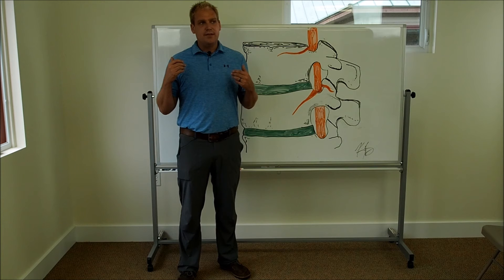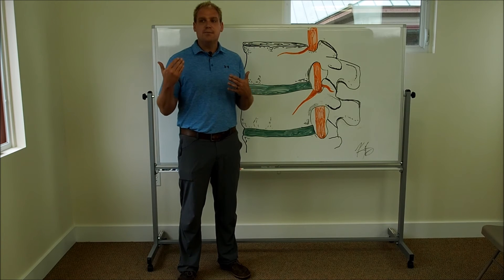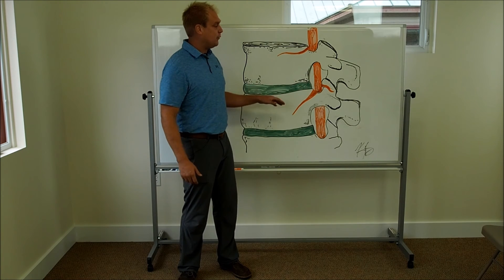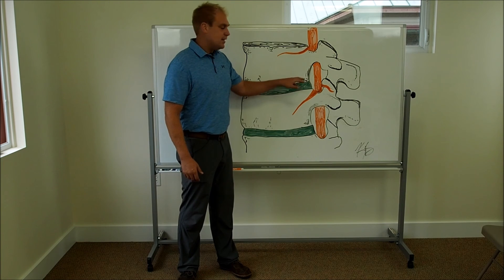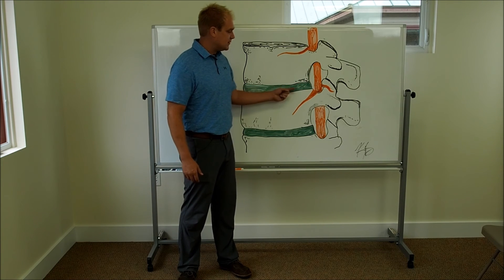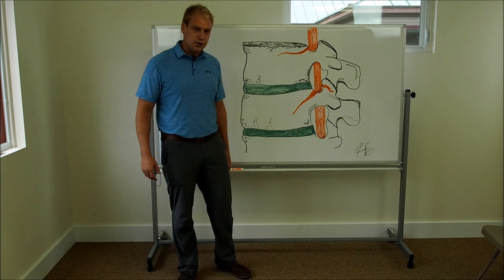So when that nerve is compressed anywhere along its pathway, it can be compressed where it comes out of the spine. It can be compressed because of disc material that bulges out and pushes on it.